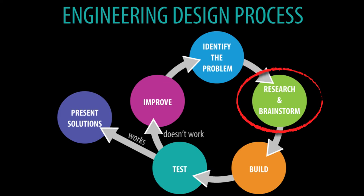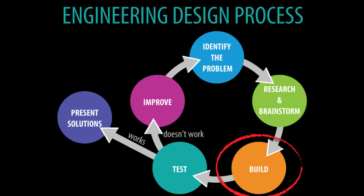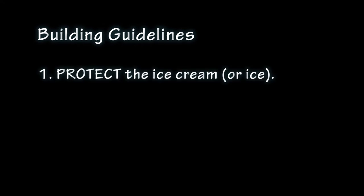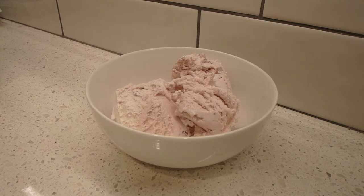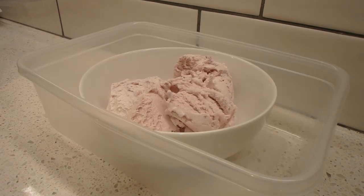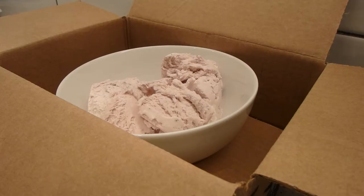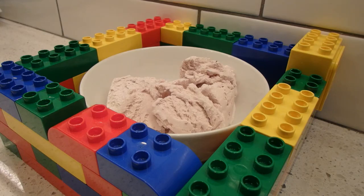After you research to learn about how heat transfer works and brainstorm ways that you can keep the ice cream cold, then you can begin to build. You will need to use materials from around your home to build something that follows these three guidelines. Number one: protect the bowl of ice cream or ice. It could be protected with Tupperware, or a box, or even something creative like a Lego or Duplo structure.